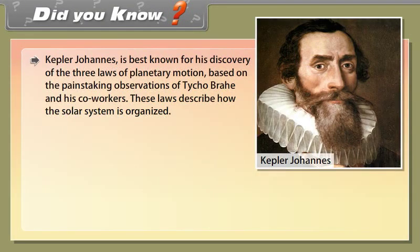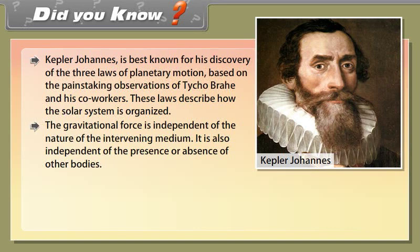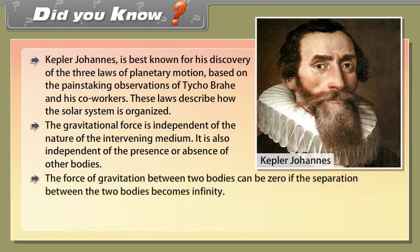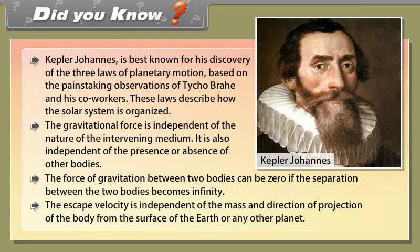Did you know. Kepler Johannes is the best known for his discovery of the three laws of planetary motion based on the painstaking observations of Tycho Brahe and his co-workers. These laws describe how the solar system is organized. The gravitational force is independent of the nature of the intervening medium. It is also independent of the presence or absence of other bodies. The force of gravitation between two bodies can be zero if the separation between the two bodies becomes infinity. The escape velocity is independent of the mass and direction of projection of the body from the surface of the earth or any other planet.